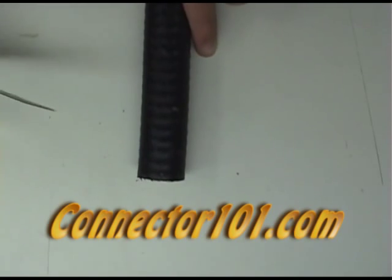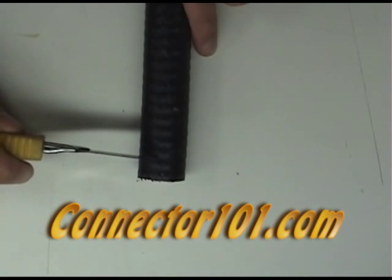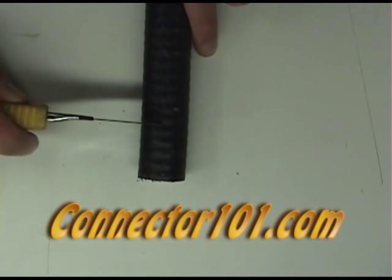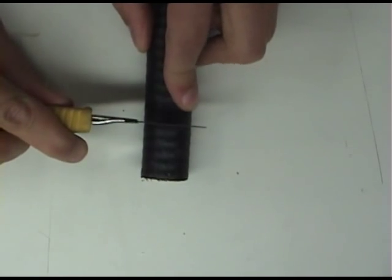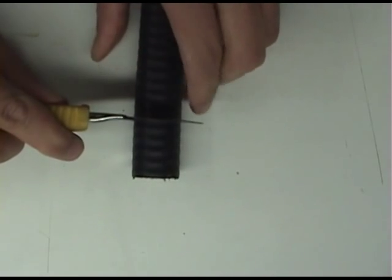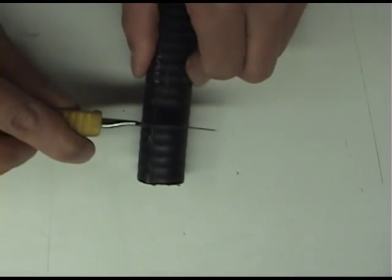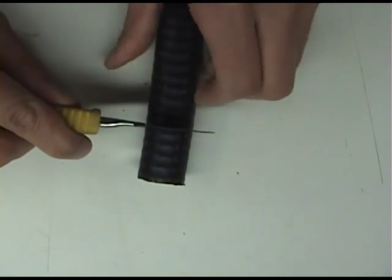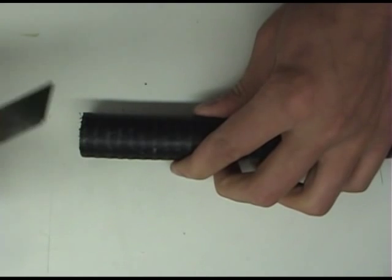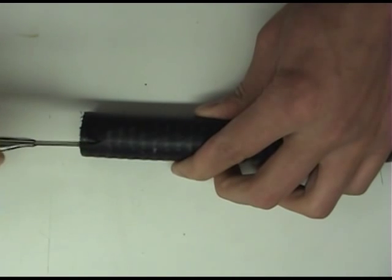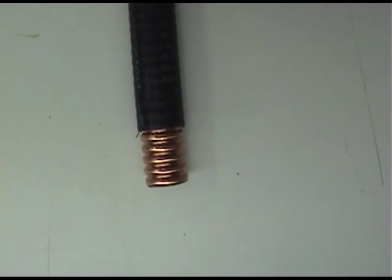Here's the cable and the first step is to count five grooves back and cut the jacket. Then to remove that piece, cut parallel to the cable, peel off that piece, and here's the result.